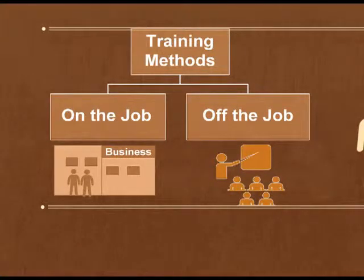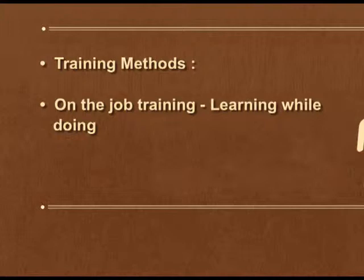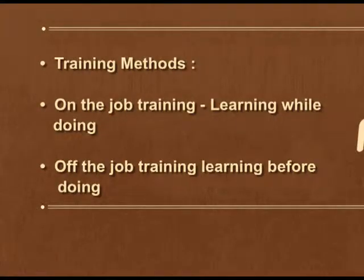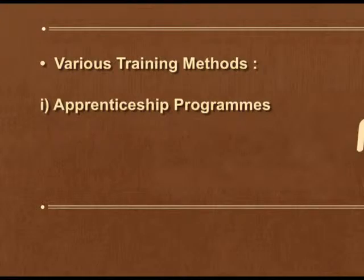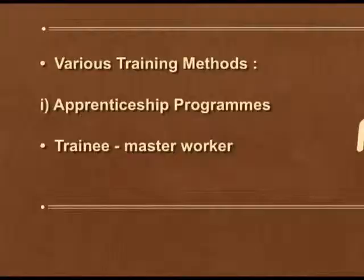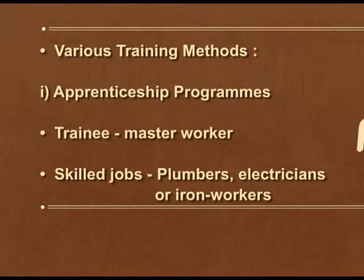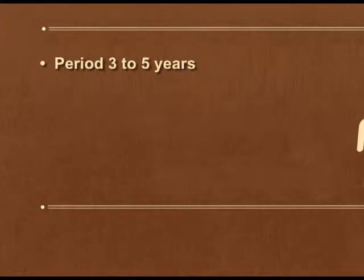There are two training methods: on the job training and off the job training. On the job training means training is given at the actual workplace — it is learning while doing. Off the job training means training given away from the actual workplace — it is learning before doing. The first training method is apprenticeship program, where the trainee works under a master worker. This is suitable for skilled jobs like plumbers, electricians, or iron workers, and the training period ranges from 3 to 5 years. It is a form of on the job training.